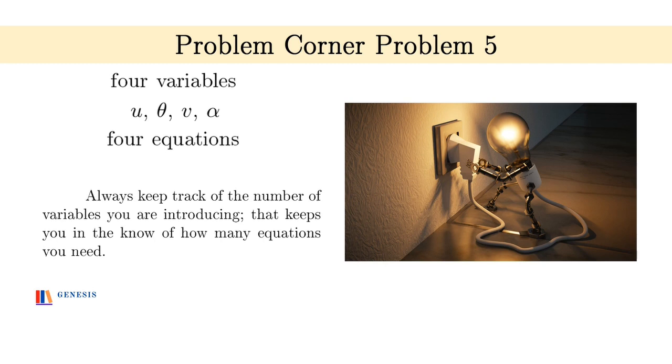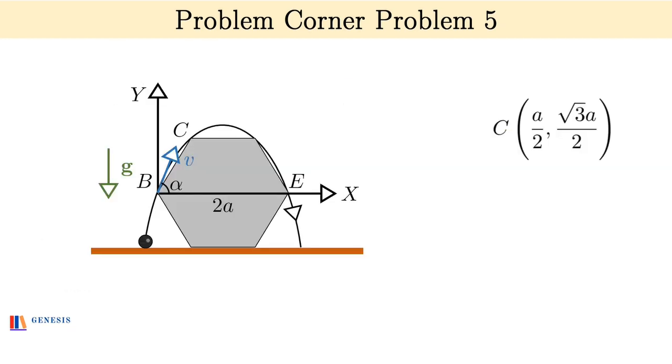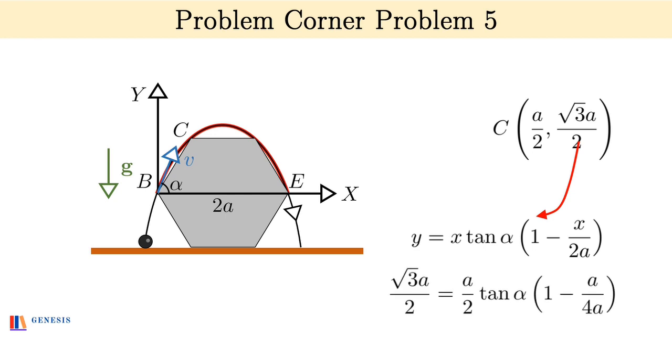Now we can see that the upper projectile is a standard projectile with initial speed v thrown at an angle alpha and it has a range of 2a. I'll first use the form y = x tan θ (1 - x/r). Now as the point c lies on this path its coordinate should satisfy this point and substituting the coordinates of c we get √3a/2 = (a/2) tan α (1 - a/4a). This will immediately give you tan alpha. I suggest you calculate the value of tan alpha and keep it as a reference for yourself.